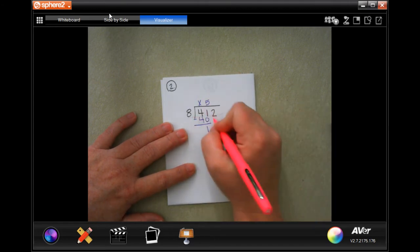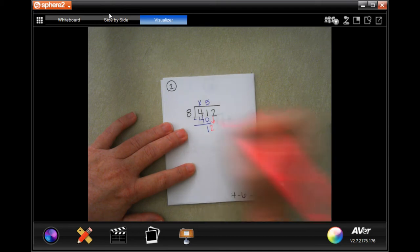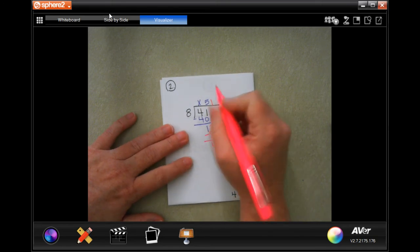8 is going to go into 12 one time. 1 times 8, 8. Subtract 4.